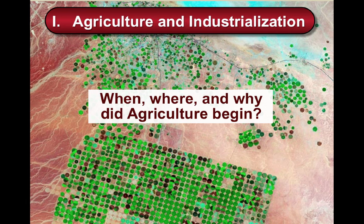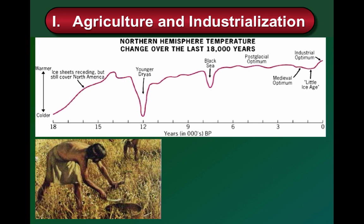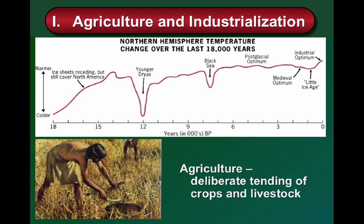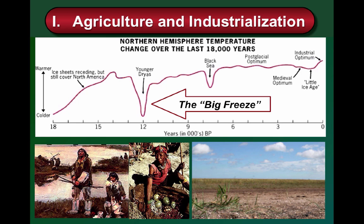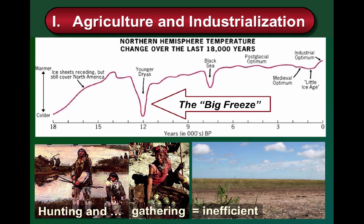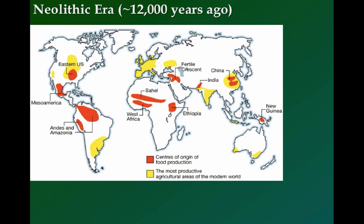Around 12,000 years ago the first agricultural revolution began — no event was more important for modern human civilization. Agriculture is the deliberate tending of crops and livestock. As colder temperatures gripped the globe, the availability of food through hunting and gathering became ever more constrained. Out of necessity, the Neolithic era began around 12,000 years ago. Neo means new and lithic means stone, so the new stone age.